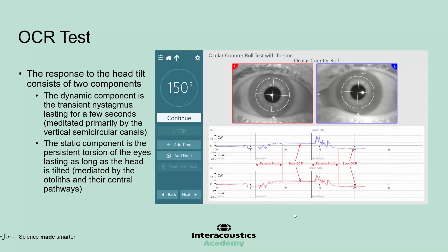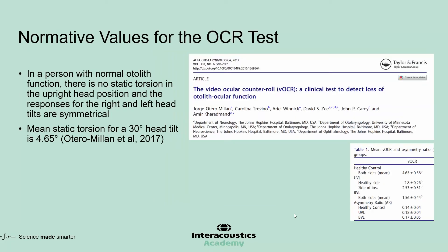As you can see here, the responses to the rightward and leftward head tilts are approximately symmetrical in this individual. The normative values for the OCR test are provided by a study in 2017 from the Hopkins group. The mean static torsion for a 30-degree head tilt is approximately 4.65 degrees. Although we're not measuring the head tilts directly, it's easy for the examiner to practice and passively move the head to approximately 30 degrees during each trial.